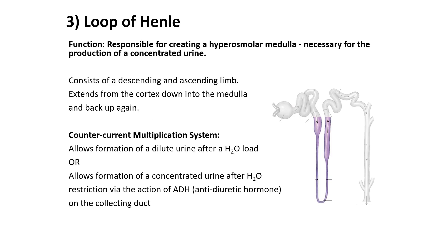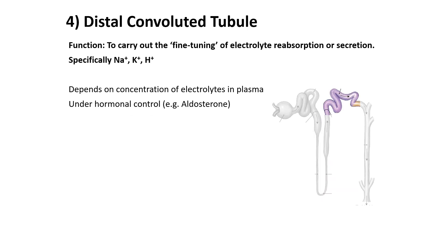The loop of Henle is responsible for creating a hyperosmolar medulla, which is necessary for the production of concentrated urine. It is composed of a descending and ascending limb and extends from the cortex down into the medulla and back up again. It has a counter-current multiplication system, which allows formation of dilute urine after a water load, or formation of concentrated urine after water restriction, via the action of ADH — antidiuretic hormone.